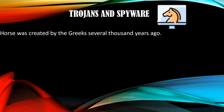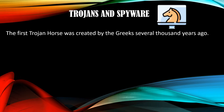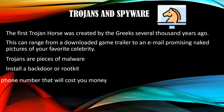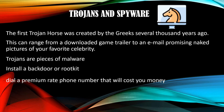The third type is Trojans and spyware. The first Trojan horse was created by the Greeks several thousand years ago — the basic concept is that you sneak something nasty into an otherwise secure computer in the guise of something nicer. This can range from a downloaded game trailer to an email promising naked pictures of your favorite celebrity. Trojans are pieces of malware which masquerade as something either useful or desirable in order to get you to run them. At this point they may well do something unpleasant to your computer, such as install a backdoor or rootkit, or even dial a premium rate phone number that will cost you money.